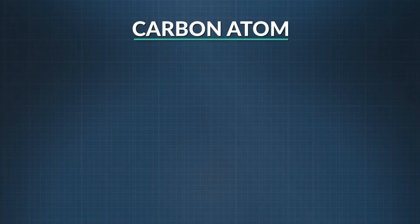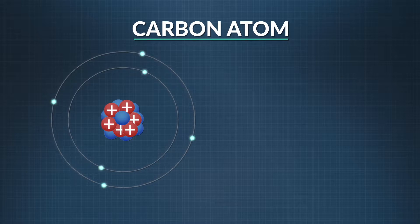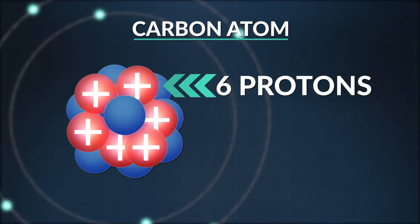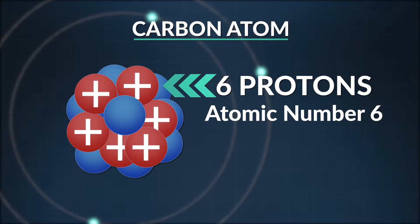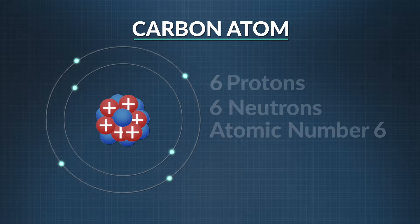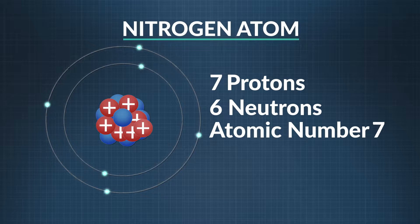Let's take a closer look at the formation of those 118 elements, using carbon as an example. The number of protons defines what the element is — that's the atomic number, and you could say it defines the element's identity. A carbon atom always has six protons. If it had seven protons, it wouldn't be carbon anymore; it would be nitrogen.